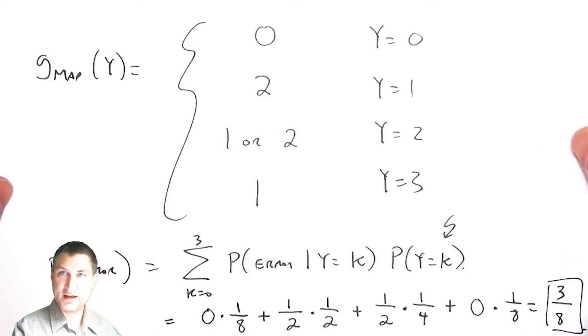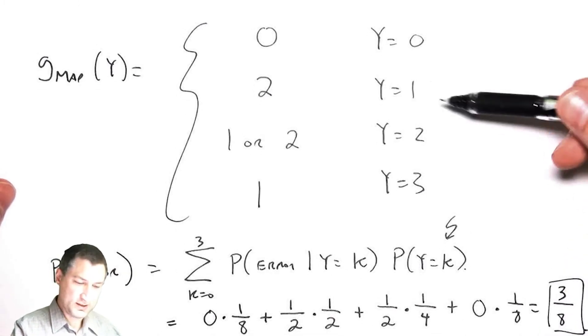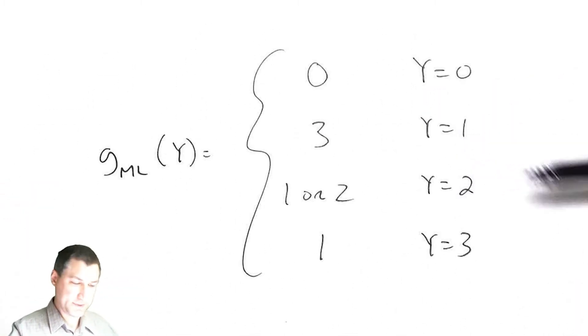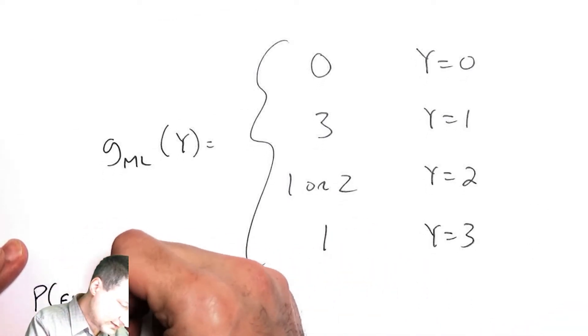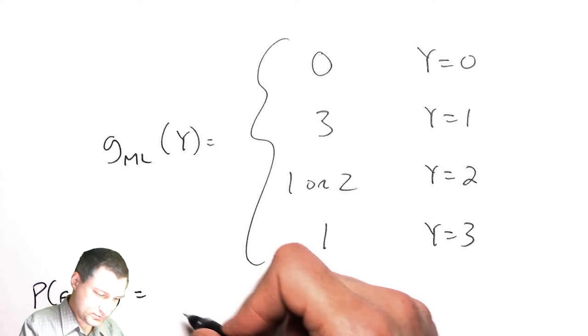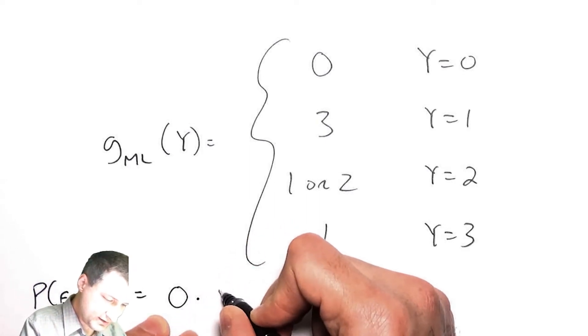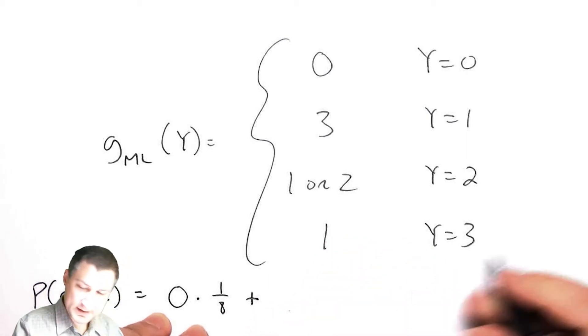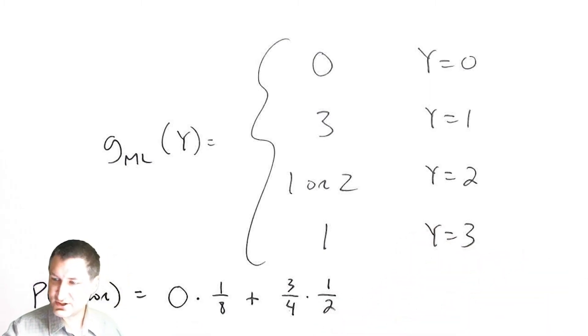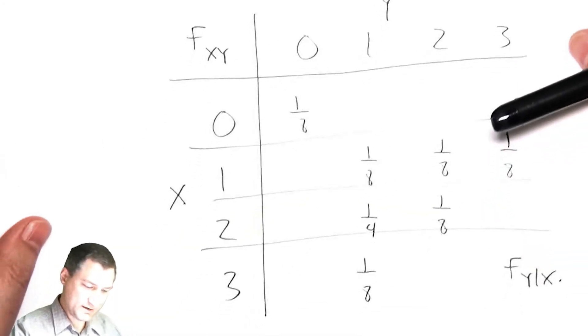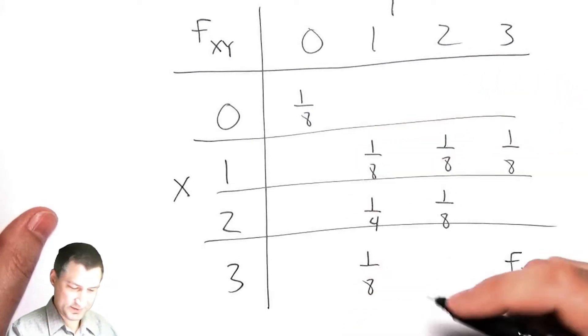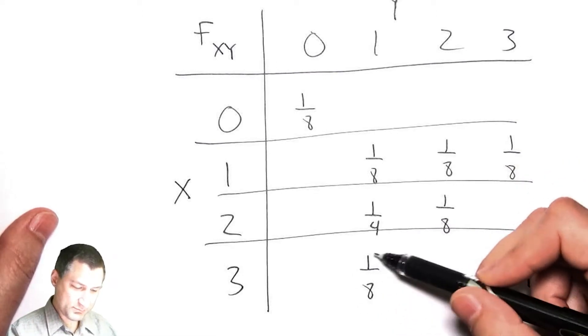Let's compare it to the MAP estimate from the previous lesson. I got a different number: for y equals one, in the MAP case I would estimate two, but in the maximum likelihood case I would estimate three. Let's compute the probability of making a mistake using ML. I have zero probability of error if I am in the y equals zero case, three-quarters probability of error if I'm in the y equals one case.